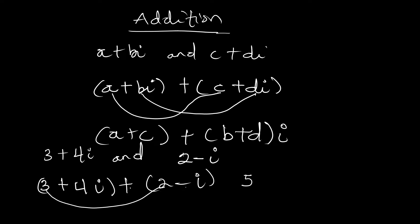Then for the imaginary parts: the coefficient of i in the second number is negative one, making that imaginary part -1. Our first imaginary part is 4, so we have 4 + (-1) = 4 - 1 = 3. So we get 5+3i as our answer.